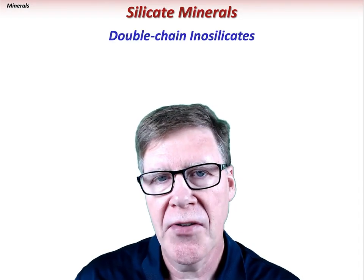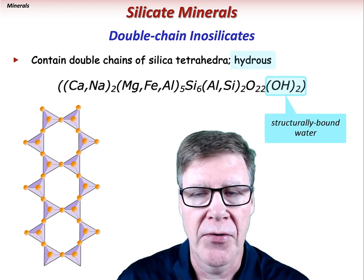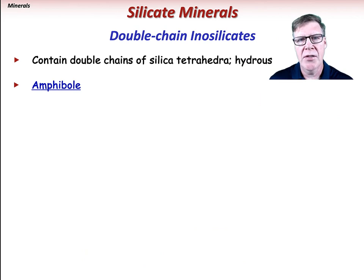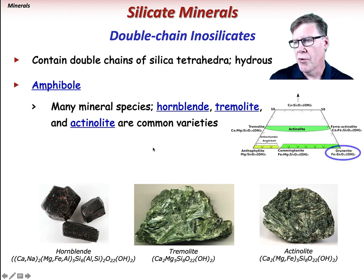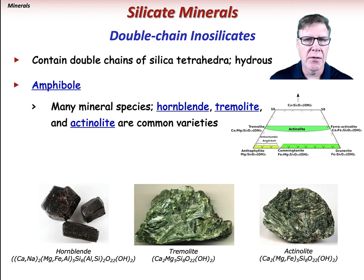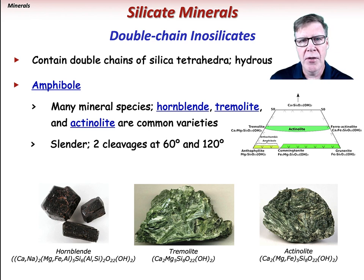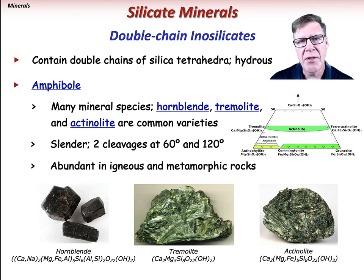The double-chained inosilicates are slightly more complex in structure and are hydrous — minerals containing water in their crystalline structure. The amphibole group is a collection of more than a dozen mineral species slightly different in composition. Some are magnesium-rich, like anthophyllite, with a continuum to iron-rich grunerite. There are also calcium-rich amphiboles including tremolite and actinolite. The most abundant amphibole is hornblende, which is more sodium-rich. Amphibole crystals are slender and may be diamond-shaped in cross-section due to their two intersecting planes of cleavage at 60° and 120°. These minerals are abundant in both igneous and metamorphic rocks.